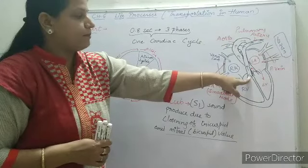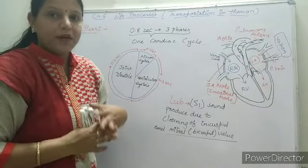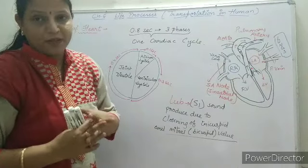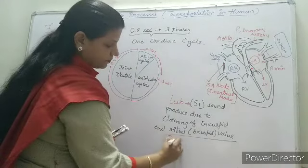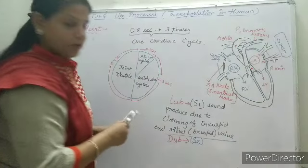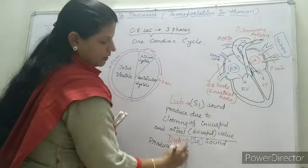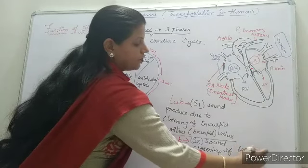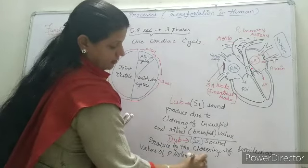The semilunar valves present at the base of the pulmonary artery and aorta become closed and prevent the backward flow of blood into the ventricle. The closing of these semilunar valves of the pulmonary artery and aorta creates a sound known as the dub sound. It is also known as S2 sound, which is produced by the closing of the semilunar valves of the pulmonary artery and aorta.